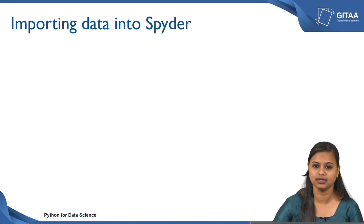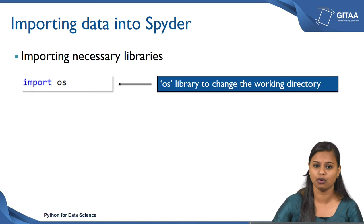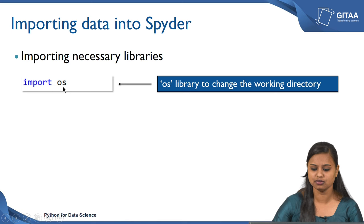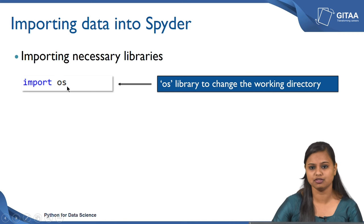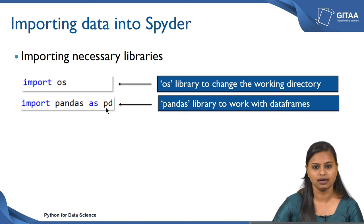Next we will see how to import data into Spyder. In order to import data, we need to import the necessary libraries. One is called OS — whenever you import any library we use the command 'import'. OS is the library used to change the working directory. Once you open Spyder, the default working directory is wherever you have installed Python. We import OS to change the working directory so that we can access data from our directory. We then import the pandas library using 'import pandas as pd', where 'pd' is the alias for pandas.